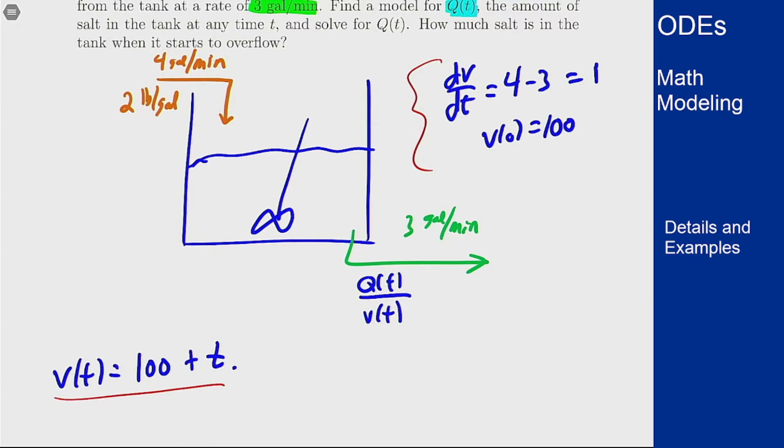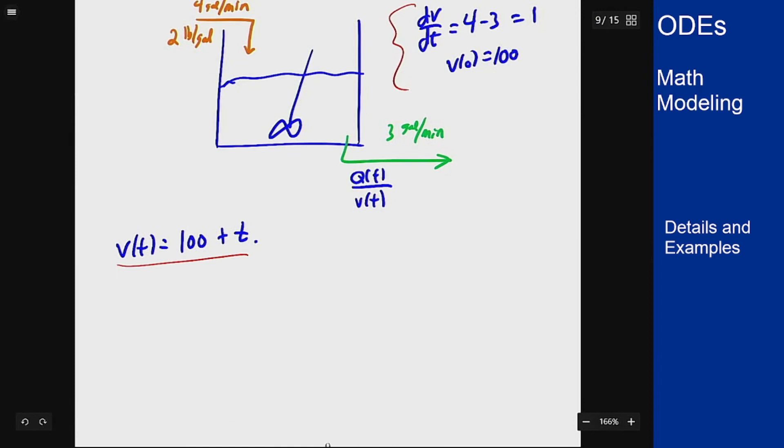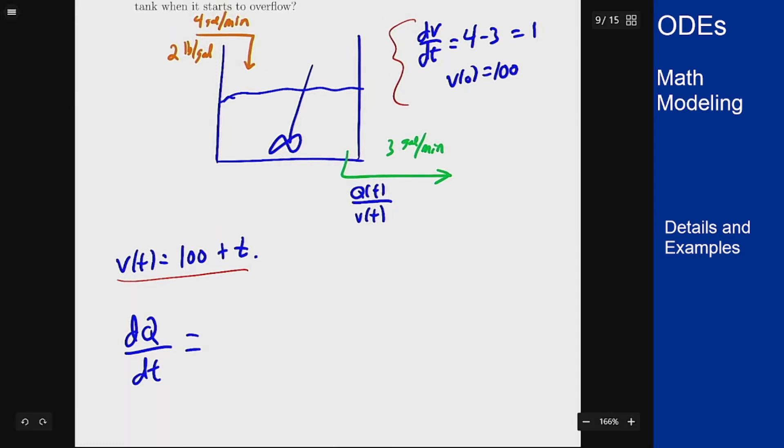With that we can now set up our actual model for Q. So the rate of change of Q, or dQ/dt, what is the rate in? The rate in, in terms of pounds per minute.